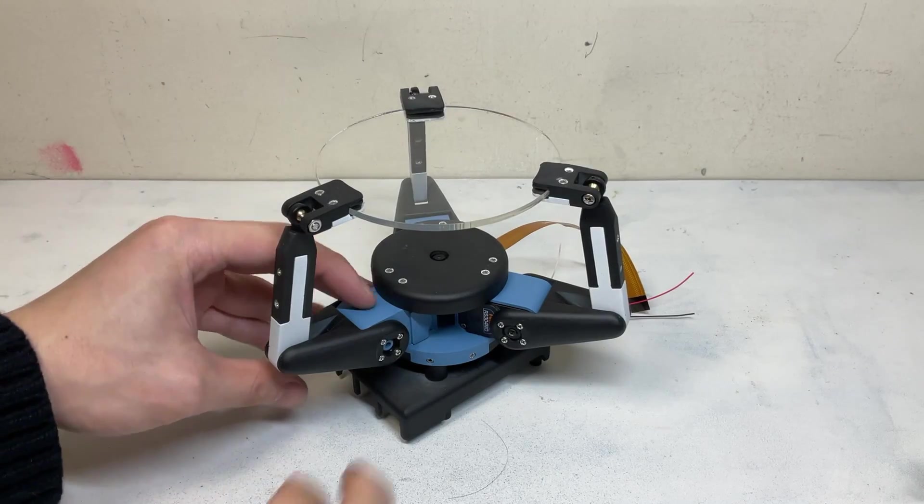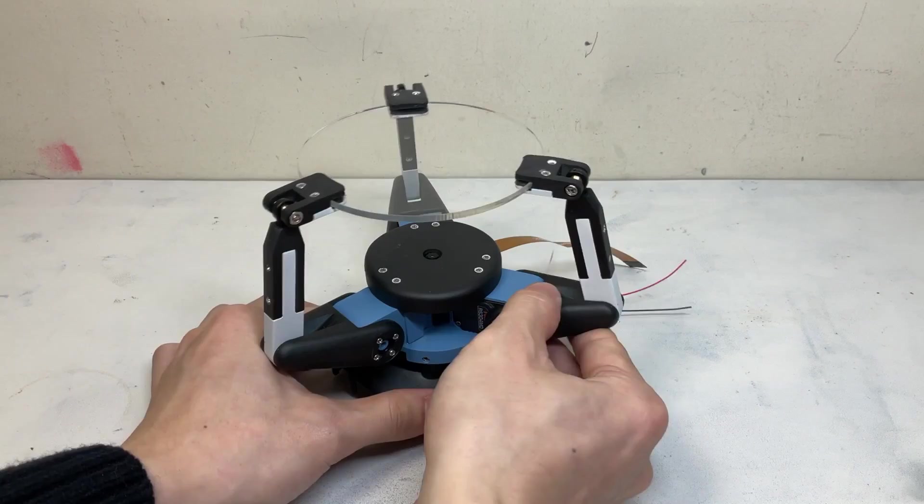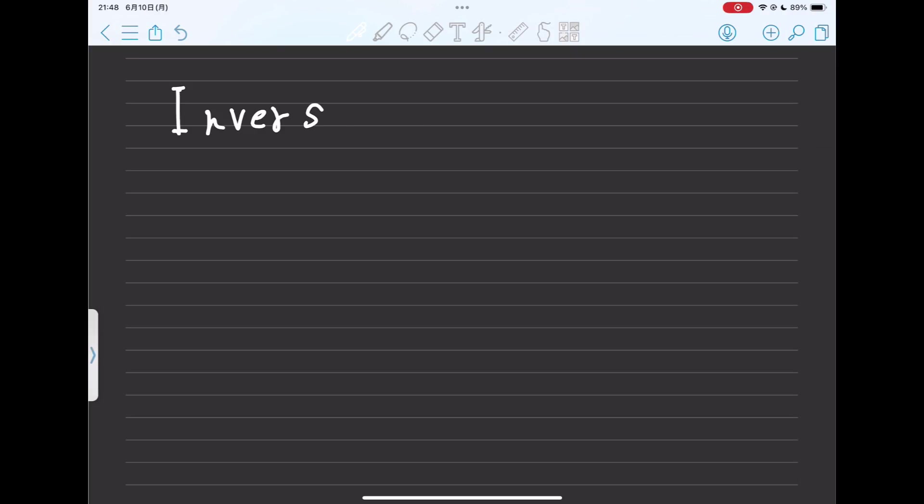Such a mechanism allows the tilt and height of the platform to be controlled by the rotation angle of the motor. Next, let us consider the inverse kinematics of this mechanism.